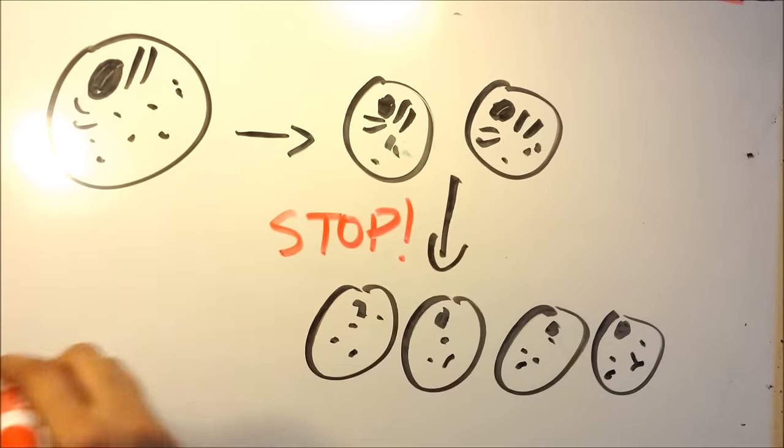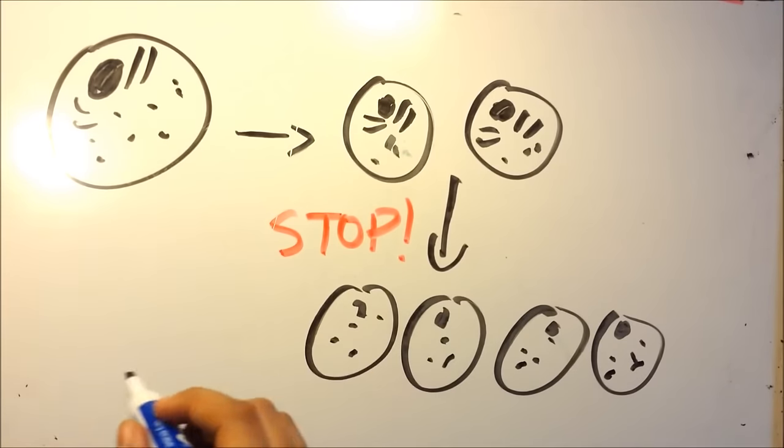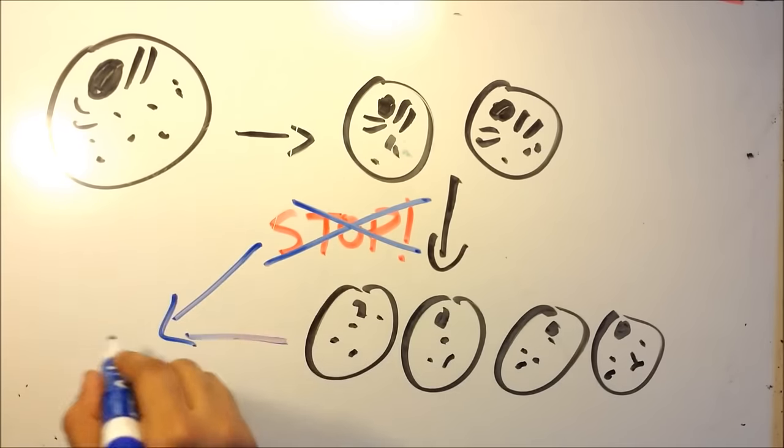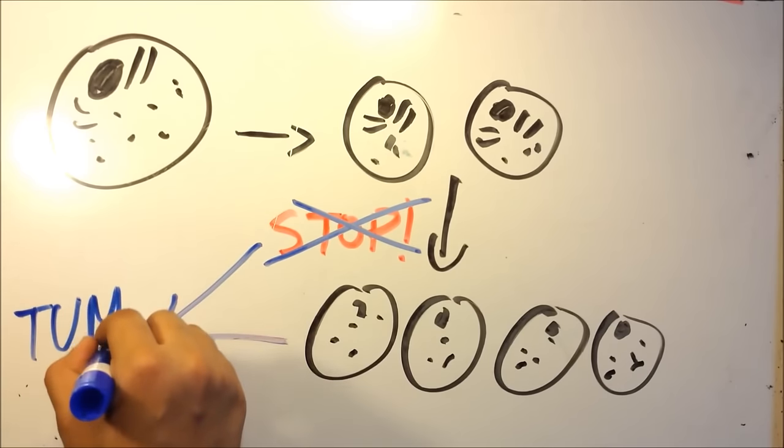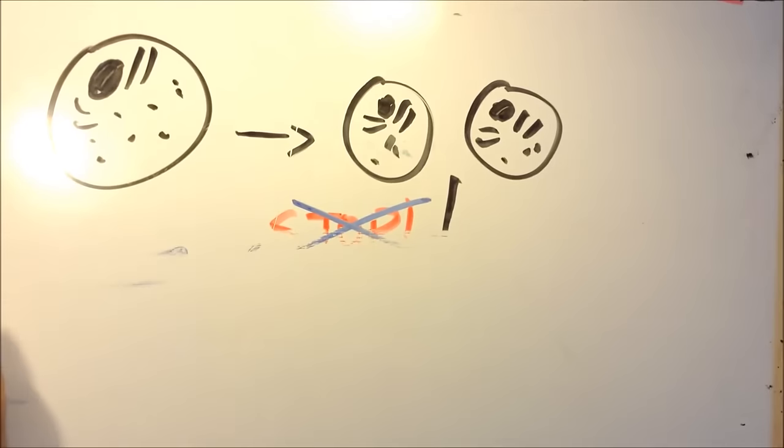However, when the DNA is mutated, the stop mechanism just stops working. So these cells are going to keep dividing. And when these cells keep dividing at an uncontrolled rate, that's when the tumor forms. The tumor is a clump of unregulated cells. That's in essence what cancer is. And these all occur due to DNA mutations.